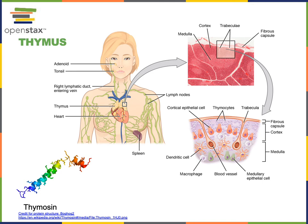The thymus produces hormones known as thymosins. In the bottom left here we can see the structure of a thymosin hormone, and the function of the thymosin hormone is to stimulate the maturation of the T-lymphocytes.